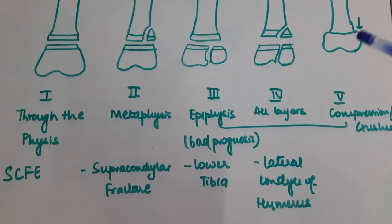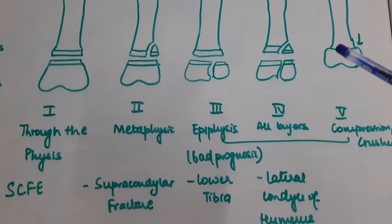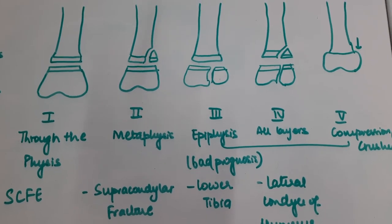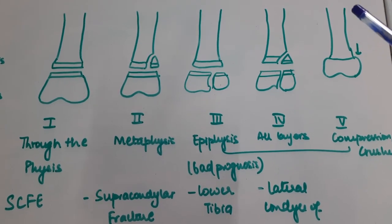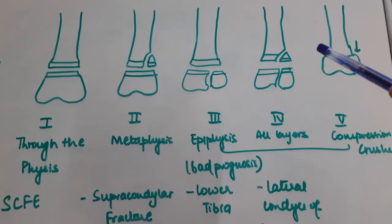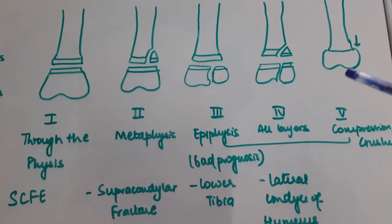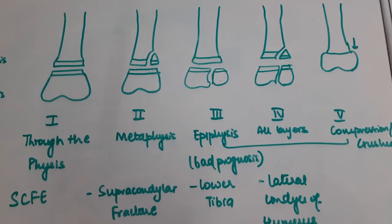Finally, in the fifth type, the bone undergoes complete compression, which means like when falling from a height, the bone will get compressed. The physial plate will get compressed and this has the worst prognosis of all of them.